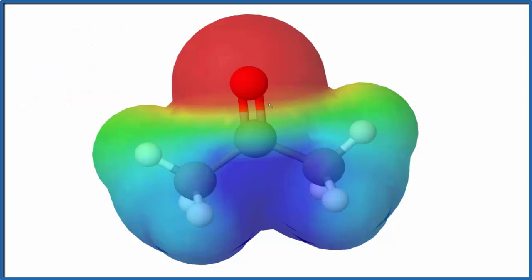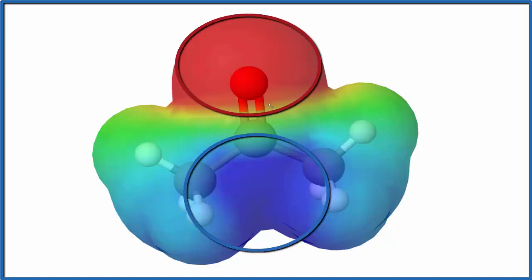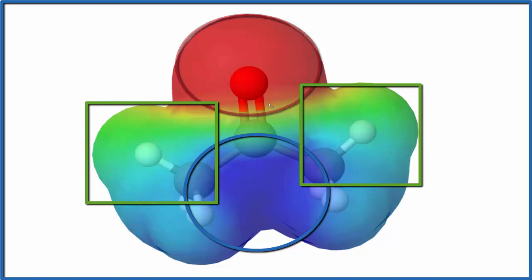So what happens when we put acetone in a nonpolar substance like an oil? Even though we have a very polar section, the red here and then this very blue area here, these methyl groups, these CH3 groups on either side, they're relatively nonpolar.